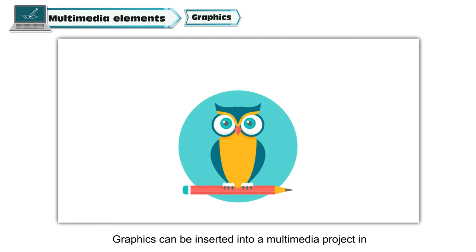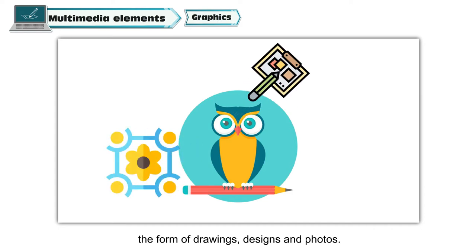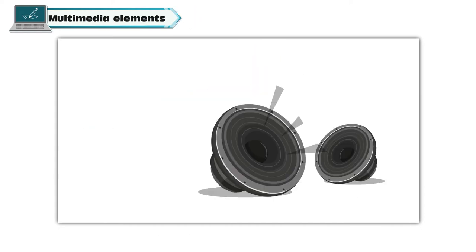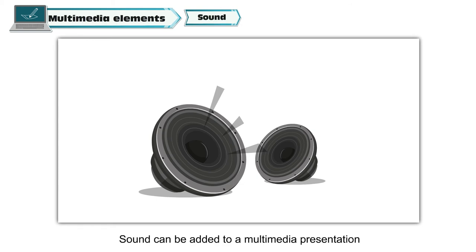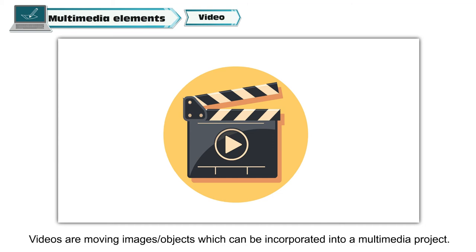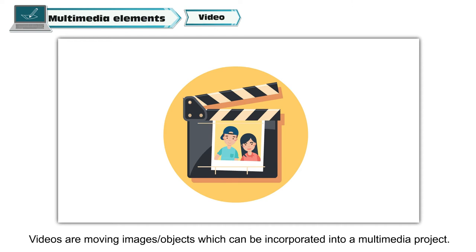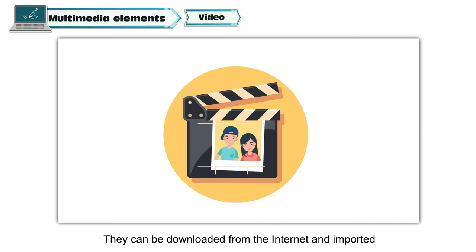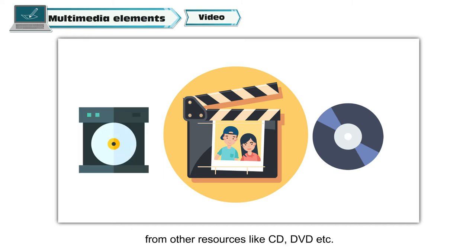Graphics can be inserted into a multimedia project in the form of drawings, designs and photos. Sound can be added to a multimedia presentation by importing sounds from an audio CD or from the Internet. Videos are moving images or objects which can be incorporated into a multimedia project. They can be downloaded from the Internet and imported from other resources like CD, DVD, etc.